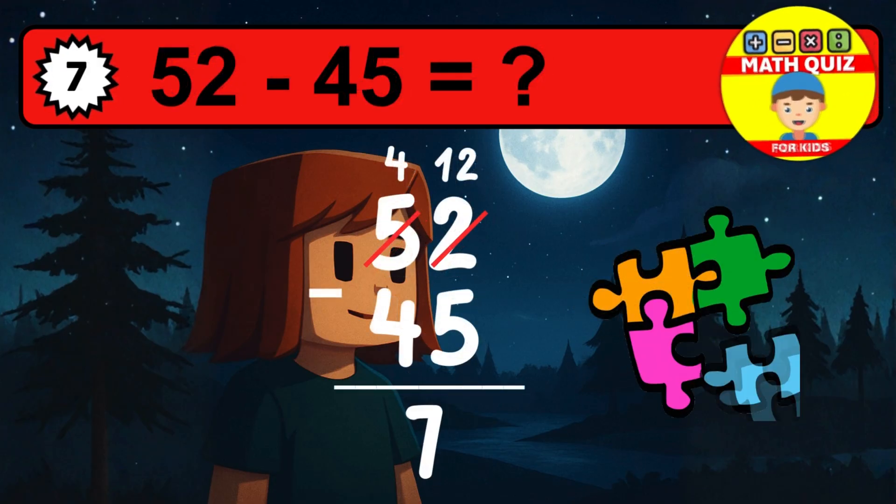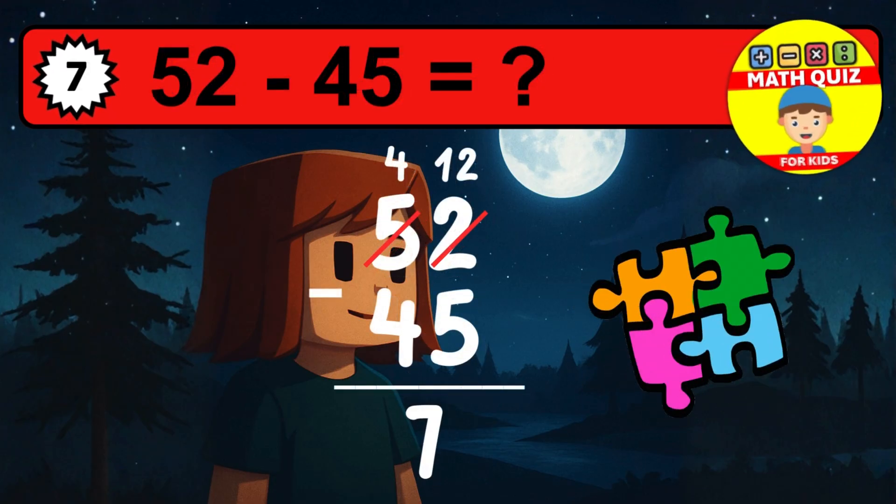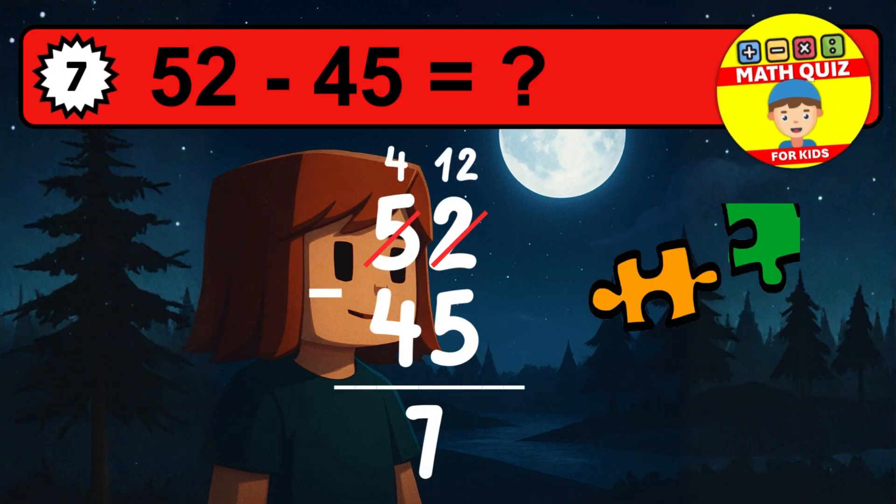Then we go to the tens. Four minus four is zero. The final answer is seven.